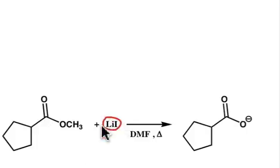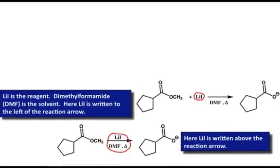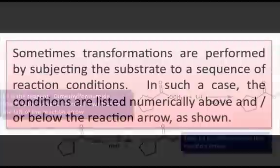In this case, the LiI is written to the left of the reaction arrow. However, chemists could also write that particular reaction by putting the lithium iodide above the arrow. It means exactly the same thing, so don't get tripped up if you see them looking different.